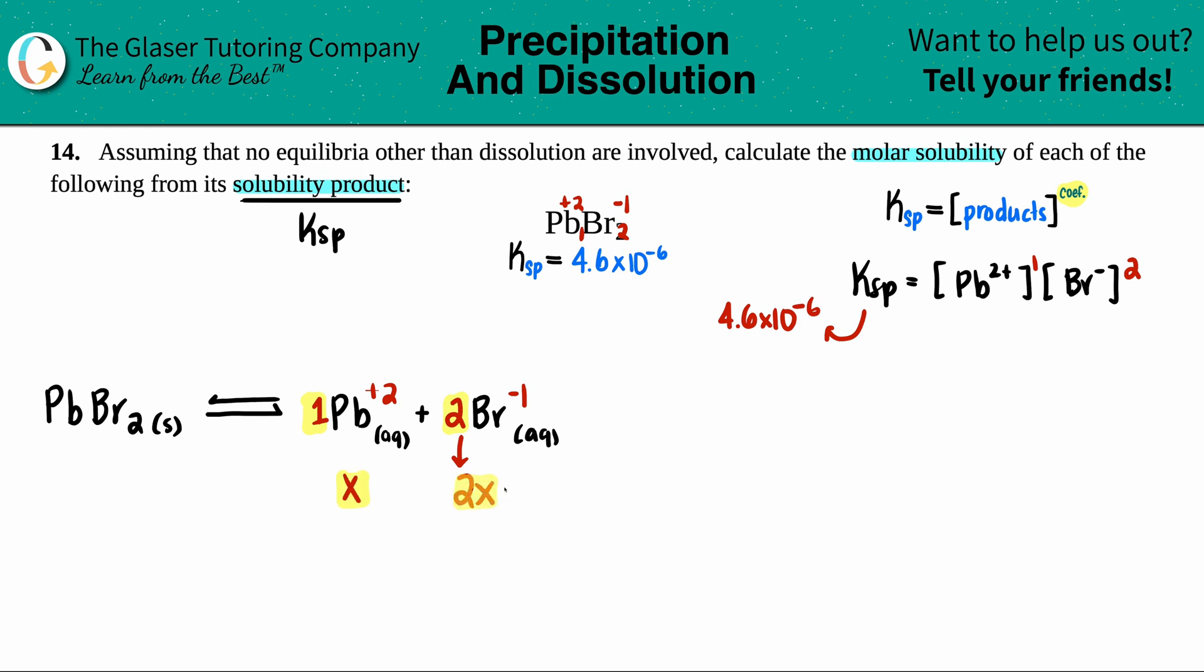So these are the numbers that I'm going to use in for my molarities for the Ksp expression. So 4.6, and actually I'll just label that. So this would be X and this would be 2X. Now let's go and do it.